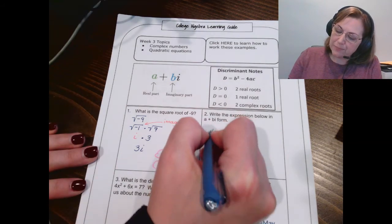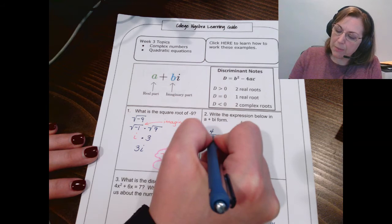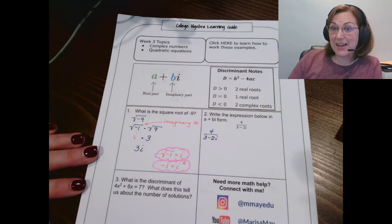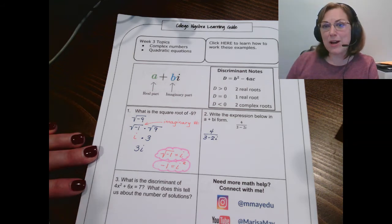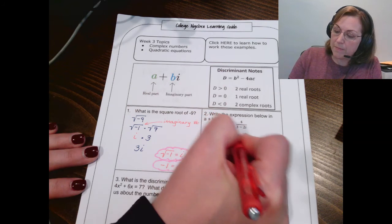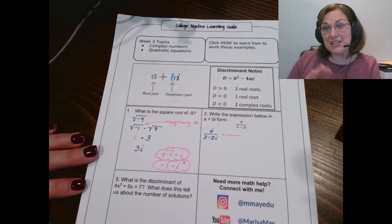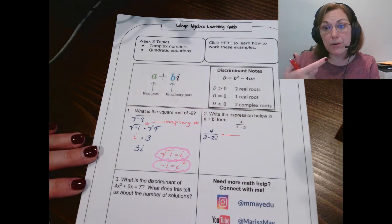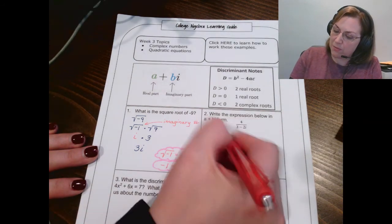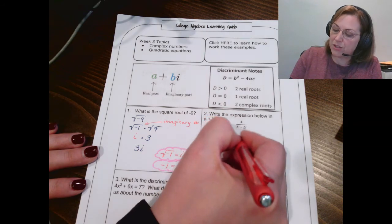What we're going to do is we're going to multiply by the conjugate. Now, if you saw my last video for week 3, you'll know that I talked about rationalizing the denominator and using a conjugate as well. But conjugate simply means the same terms, different operation between them. For instance, I have 3 minus 2i. Its conjugate would be 3 plus 2i.